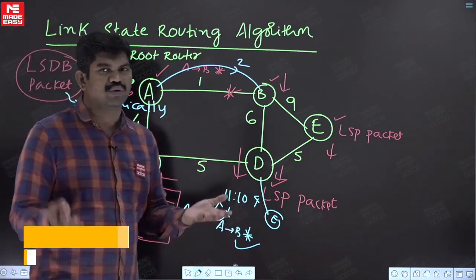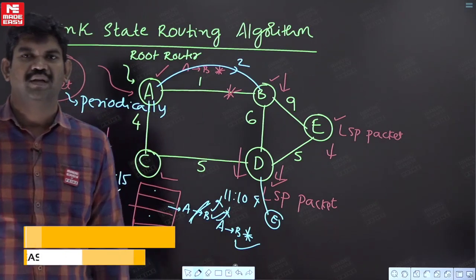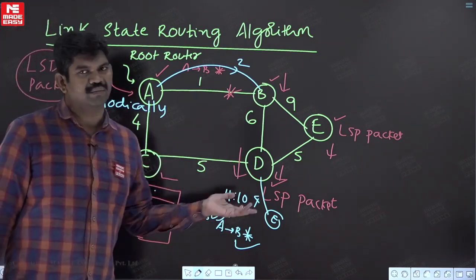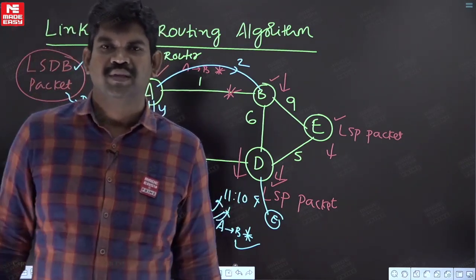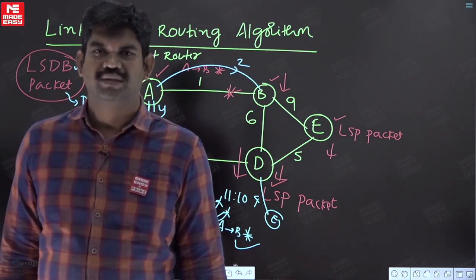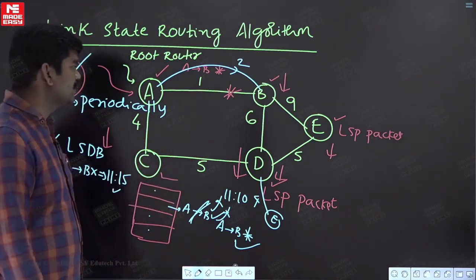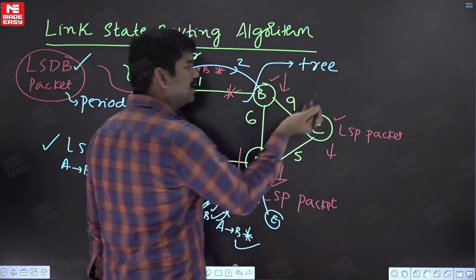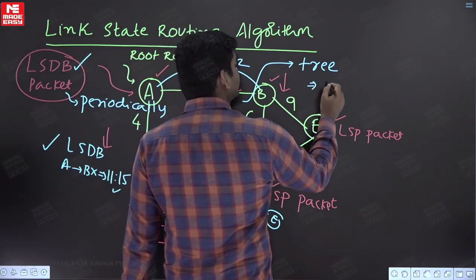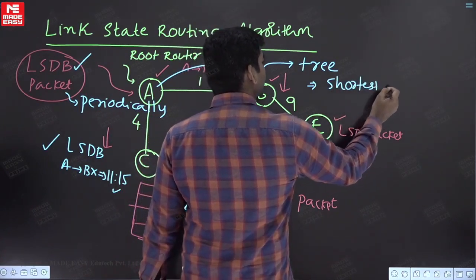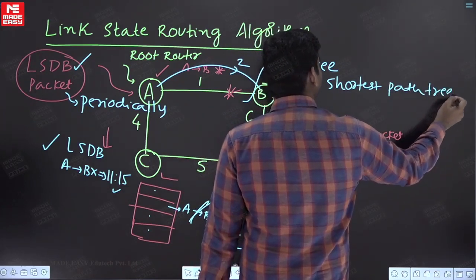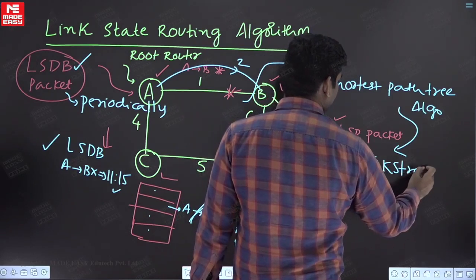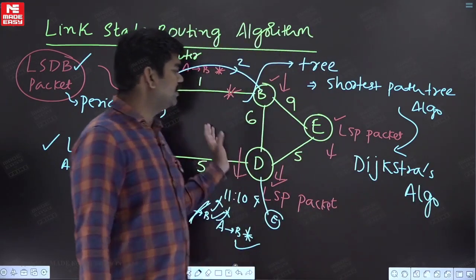When a link is broken it is known to all routers immediately, so you will not get any count to infinity problem. However, when A sends this LSDB packet to all routers using flooding, there is a problem: flooding can form a loop or cause congestion. The solution is to convert the graph into a tree first, then apply flooding — eliminating loops. Converting the graph into a tree is done by the shortest path tree algorithm, also known as Dijkstra's algorithm.